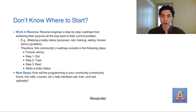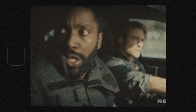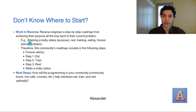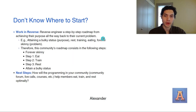Now once you've determined what your purpose is, you want to work in reverse. Reverse engineer a step-by-step roadmap from achieving their purpose all the way back to their current problem. For example, attaining a bulky status is the purpose, but before that they have to rest, they have to train, they have to eat — and then it goes all the way back to the initial problem, which is them being skinny.